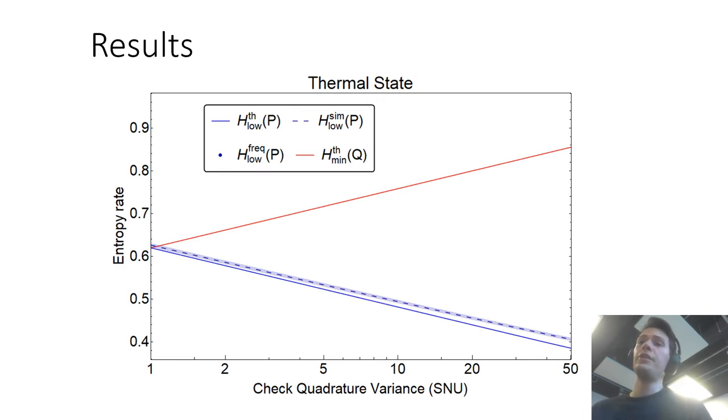In solid blue line here is the theoretical value for the entropy bound that we need to calculate. And in red solid line is the unconditional min entropy of the data quadrature. So this red line here is the amount of random numbers you would extract if you assume the source is trusted. So when you have a thermal state, when the variance increases the apparent noise in your signal increases so the red line goes up.